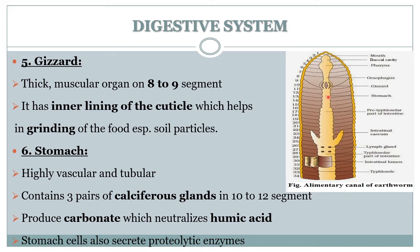The stomach is a tube-like, highly vascular and highly glandular organ. It consists of three pairs of calciferous glands located at segments 10, 11, and 12, which secrete carbonate that neutralizes the humic acid. The stomach's glandular cells also secrete proteolytic enzymes that digest protein.